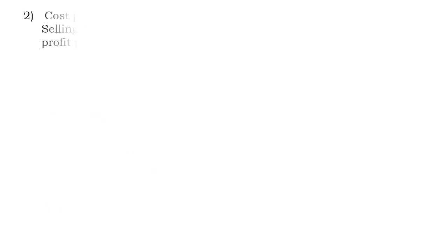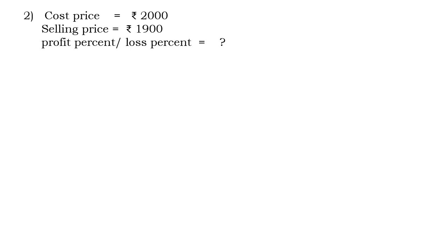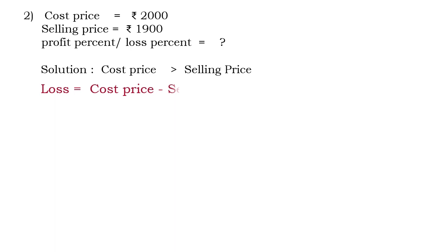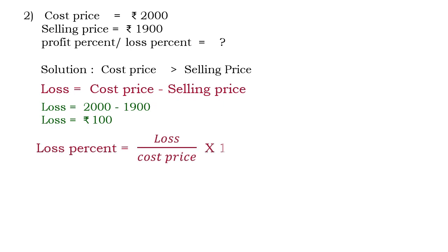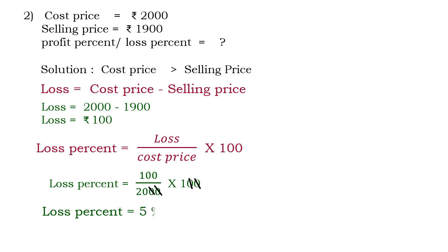Let's solve one more problem. Cost price is 2000 and selling price is 1900. Here, cost price is greater, so we are at a loss. Apply the loss formula: Cost Price − Selling Price. After subtraction, the answer is 100. Now, for loss percent — Loss Percent = (Loss ÷ Cost Price) × 100. Substitute the values, cancel the zeros, and after division the answer is 5 percent.